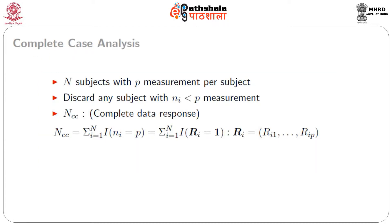Complete case analysis for missing data. Suppose there are n subjects with an expected p measurements per subject, but there might be some subjects which contain fewer than p measurements. Here we discard any subject with n_i less than p, where n_i is the number of observations for the i-th subject. Then we have a set of complete cases denoted by n_cc.